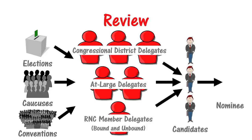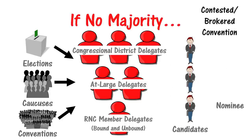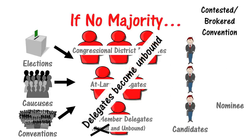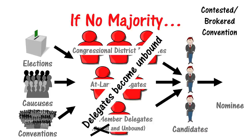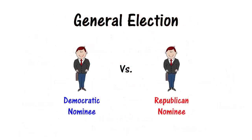The candidate who receives a majority of votes becomes the Republican nominee for president. If no candidate receives a majority, the delegates become unbound and therefore free to vote for any candidate. The delegates continue voting and negotiating until a candidate receives a majority. After the Republican Party's presidential candidate is chosen, he or she moves on to the general election.